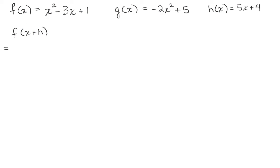If F of X equals X squared minus 3X plus 1, G of X equals negative 2X squared plus 5, and H of X equals 5X plus 4, let's do some work here.